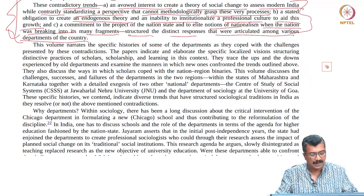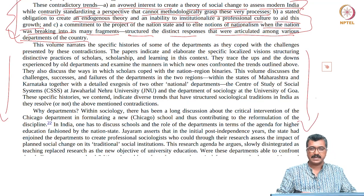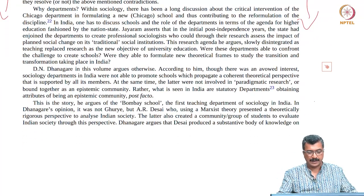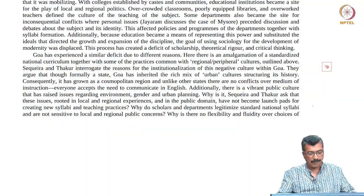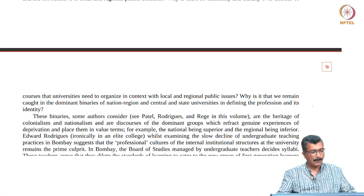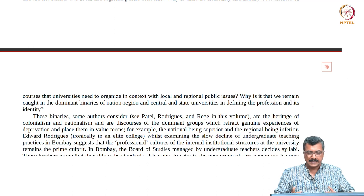The remaining part of the essay includes very specific analyses of different universities and departments — an essay on the Centre for the Study of Social Systems at JNU, an essay on the Bombay School, and an essay on Karnataka by Professor Jay Ram — which we are not going into. These two essays combined should have given some insights about how sociology as a discipline emerged and what are the major theoretical ideas and debates that structure the genesis and development of sociology and anthropology in India. We are concluding this session and will come up with the next session in the coming class. Thank you.